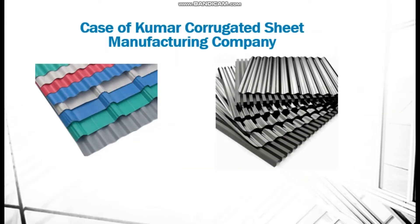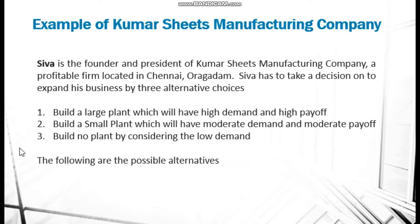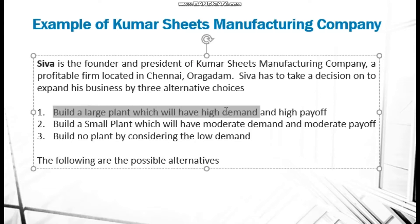Let us see a simple case: Kumar Corrugated Sheets Manufacturing Company. The manager and founder is Shiva, president of the company located in Chennai, Oragadam — a fictional example. Shiva has to take a decision on expanding his business with three alternative choices: build a large plant, build a small plant, or build no plant at all and stay without any new investment.